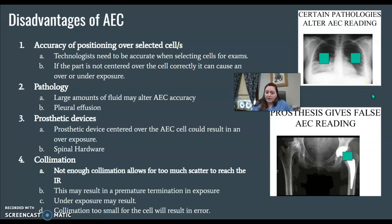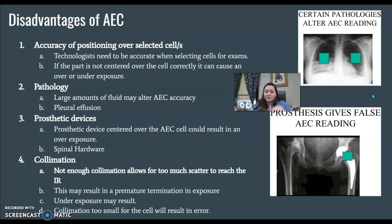Collimation can also cause an error. If you don't collimate and your field is wide open, it's going to allow too much scatter to reach the image receptor. Those ionization chambers are going to fill faster the more open the light field you use. Collimation is something simple we can do to improve our image, reduce scatter, reduce patient dose, and make sure AEC works properly.